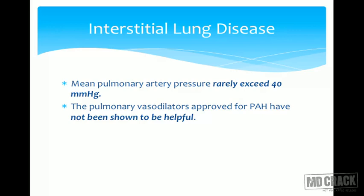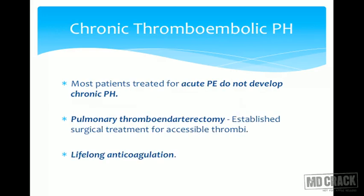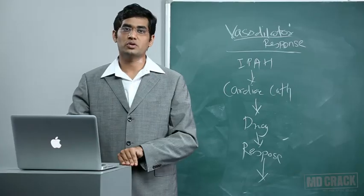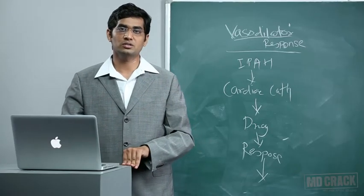For pulmonary hypertension associated with chronic thromboembolic disease, treatment is lifelong anticoagulation. Suitable candidates should undergo pulmonary thromboendarterectomy. The treatment is surgical — not pulmonary vasodilators — combined with lifelong anticoagulation. This concludes the discussion on pulmonary hypertension. Thank you.